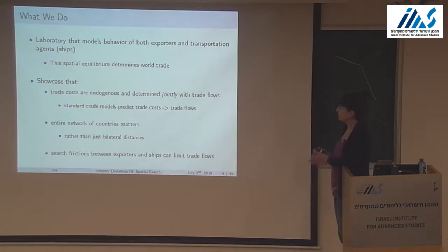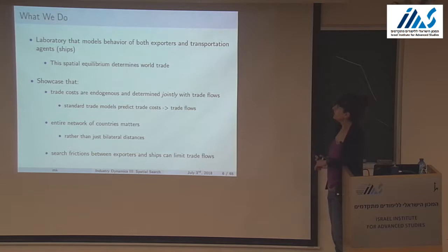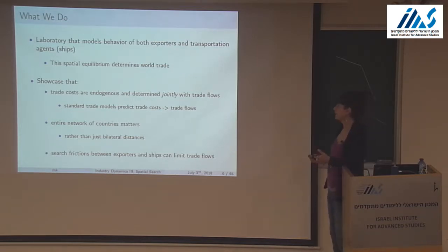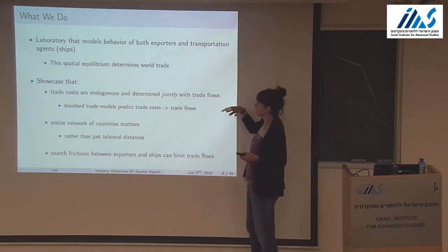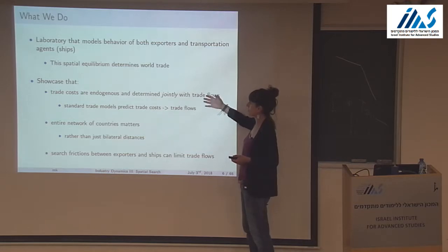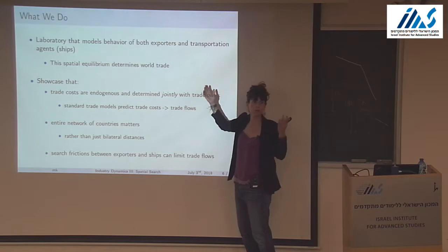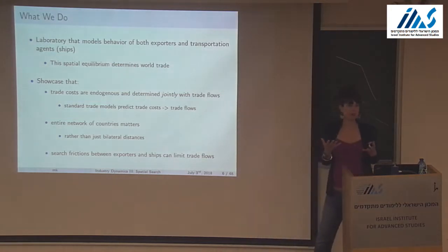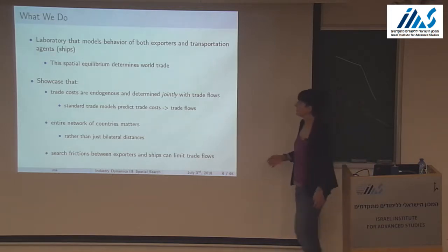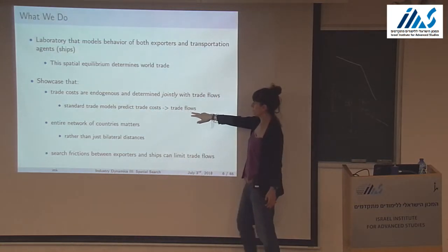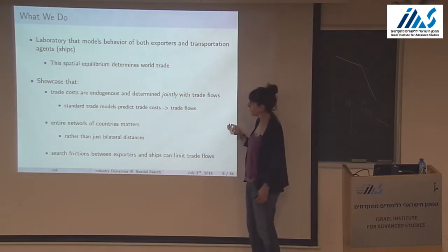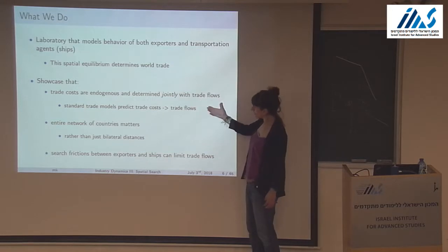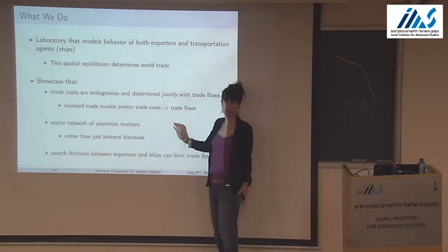What we do in this paper is build a model of both exporters and transportation agents, where the spatial equilibrium determines the trade costs different countries face and the resulting trade flows. The goal is to showcase that trade costs are endogenous — determined jointly with trade flows as equilibrium prices. In standard trade models, iceberg trade costs are exogenous and fall from the sky, but in principle there is an arrow going in the other direction as well.